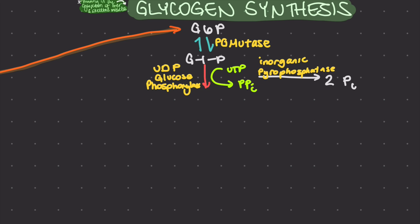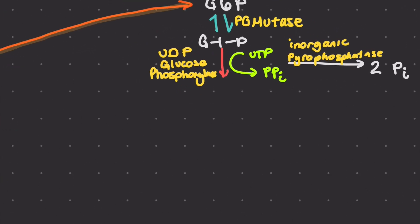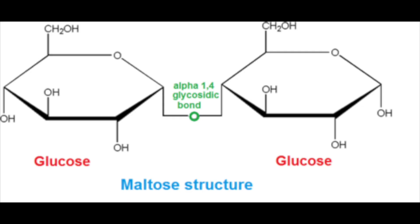The net result is the conversion of glucose-1-phosphate to UDP glucose, which is then ready to be added to a growing glycogen chain by the enzyme glycogen synthase. Glycogen synthase forms alpha-1,4 glycosidic linkages between glucose molecules, which can create a linear chain.